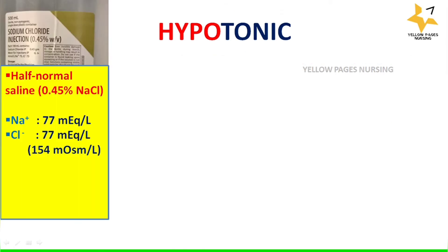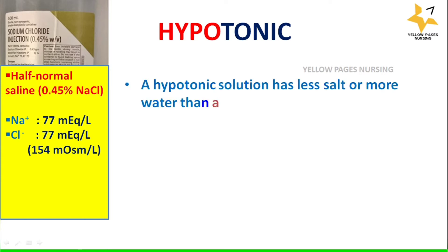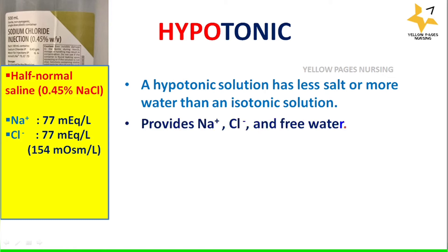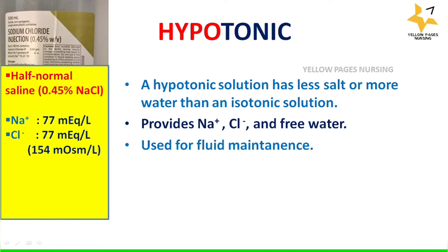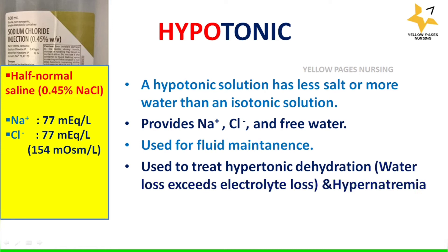Hypotonic solution has less salt or more water than an isotonic solution. It provides sodium chloride and free water. It contains 77 milliequivalents per liter of sodium and 77 milliequivalents per liter of chloride, totaling 154 milliosmoles per liter.